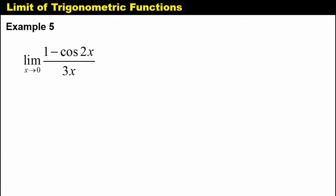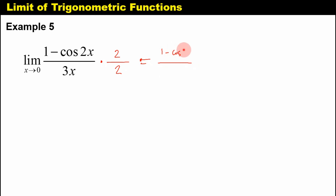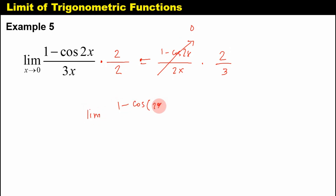Now let's move to another example: the limit of 1 minus cosine 2x over 3x as x approaches 0. Notice that the inside angle is not equal to the denominator. We multiply numerator and denominator by 2 so we can interchange the positions of 2 and 3, putting it in the form 1 minus cosine 2x over 2x times 2 over 3. Since 1 minus cosine 2x over 2x equals 0, we get 0 times 2 over 3 equals 0. Therefore, the limit equals 0.